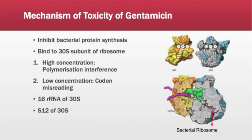Specifically, gentamicin binds to four nucleotides in the 16S rRNA, which is a component of the 30S subunit. Gentamicin also binds to one amino acid in the protein S12, another component of the 30S subunit. These two components are at the interface of the 30S and 50S subunits of the bacterial ribosome, and therefore are near the active sites. This region interacts with the wobble base in the anticodon tRNA, leading to interference with the initiation complex, misreading of mRNA, and breakup of polysomes.